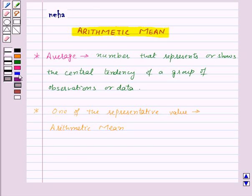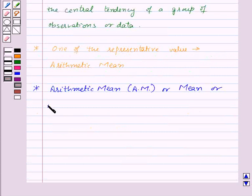Now let's see what is arithmetic mean. So the arithmetic mean, denoted as AM or mean or average, is defined as sum of all observations upon number of observations.